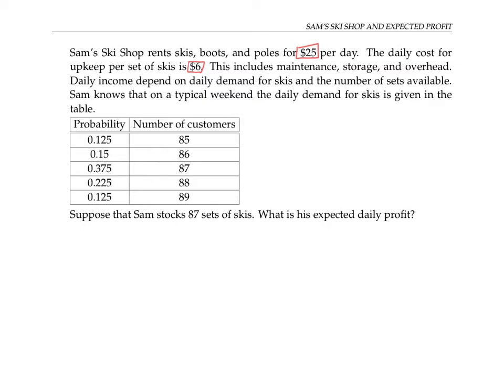Daily income depends on the daily demand for skis and the number of sets available. Sam knows that on a typical weekend, the daily demand for skis is given in this table.